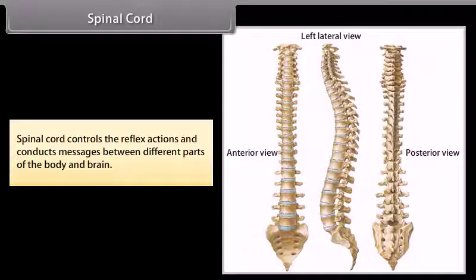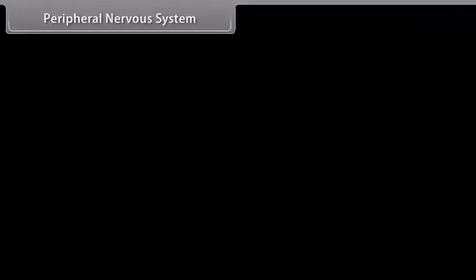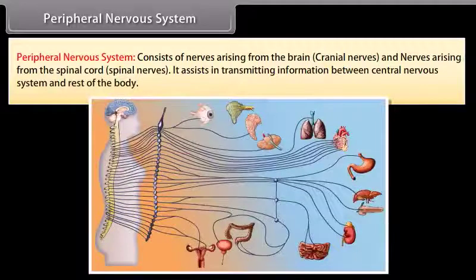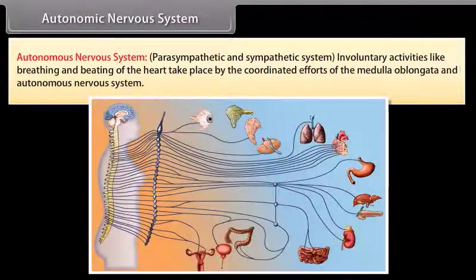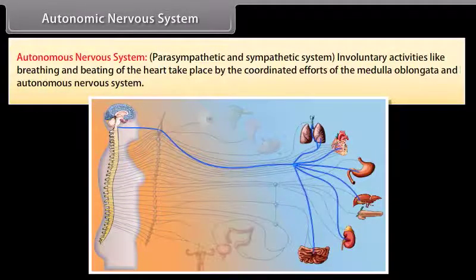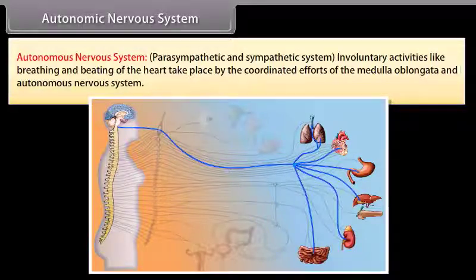Spinal cord. The spinal cord controls reflex actions and conducts messages between different parts of the body and the brain. Peripheral nervous system. The peripheral nervous system consists of nerves arising from the brain (cranial nerves) and nerves arising from the spinal cord (spinal nerves). It assists in transmitting information between the central nervous system and the rest of the body. Autonomic nervous system. The autonomic nervous system includes the parasympathetic and sympathetic systems. Involuntary activities like breathing and beating of the heart take place by the coordinated efforts of the medulla oblongata and the autonomic nervous system.